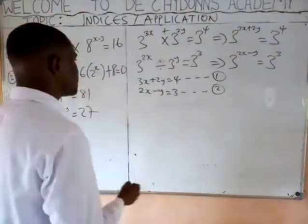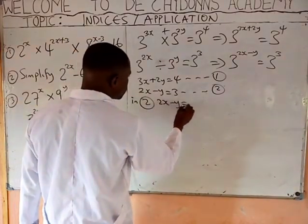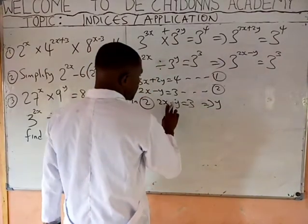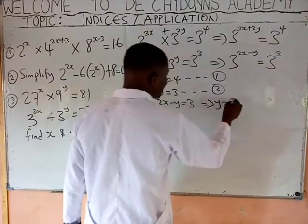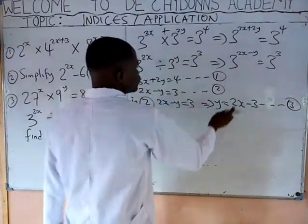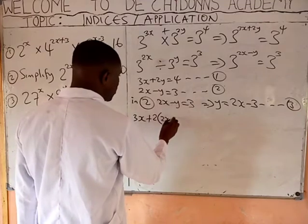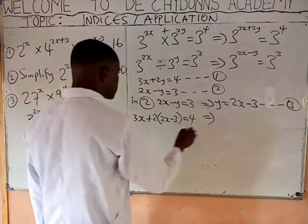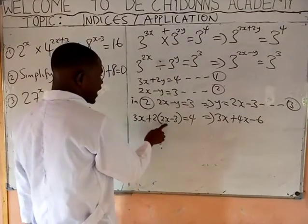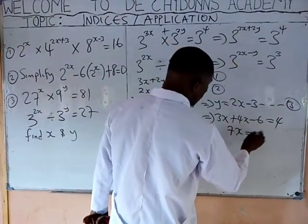We solve this simultaneously using the substitution method. From equation 2, 2X minus Y equals 3, so Y equals 2X minus 3 — call this equation 3. Substituting into equation 1: 3X plus 2 bracket 2X minus 3 equals 4. That gives 3X plus 4X minus 6 equals 4, which is 7X equals 10.